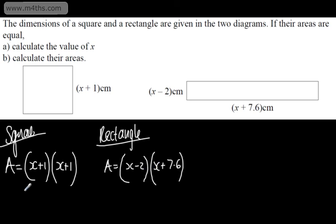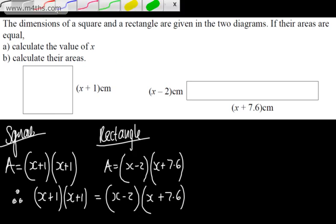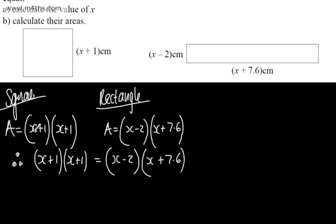Since the two areas are equal, we can state that x plus 1 multiplied by x plus 1, or x plus 1 all squared, will be equal to x minus 2 multiplied by x plus 7.6. To begin with, this looks like a quadratic equation, but once we expand it out, we will see that the x squared terms will cancel.